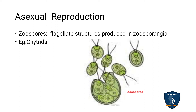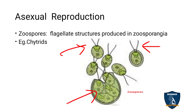The zoospores are flagellate, and they are produced in the zoosporangium. You have to remember that zoospores have flagellate structures and are produced from the zoosporangium. Example: Chytridius.